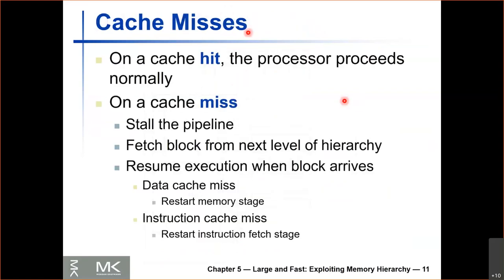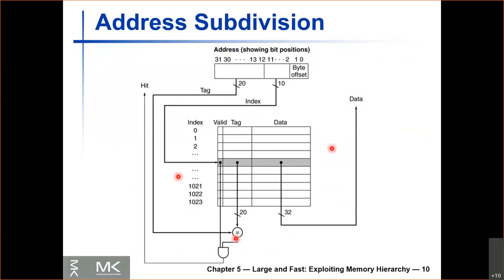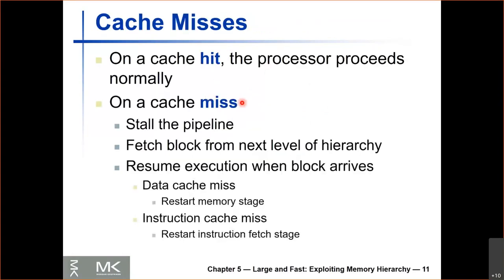We also had cache misses. When we have a cache hit, it takes one cycle — in our pipeline, the data memory stage and instruction memory stage each take one cycle. If we have a cache miss, we need to fetch the data from the next level in the hierarchy, which takes more time. We need to stall the pipeline until the data arrives. If we have a data cache miss, we stall in the memory stage; if we have an instruction cache miss, we stall in the instruction fetch stage.